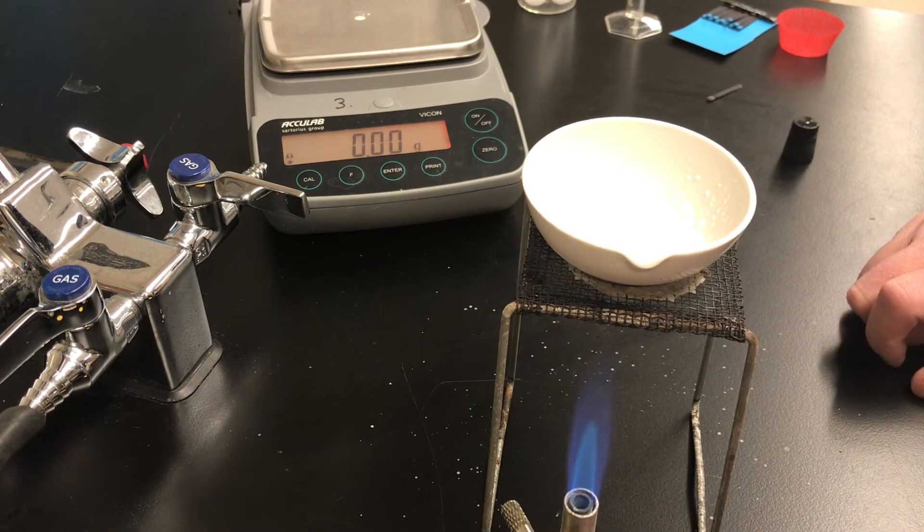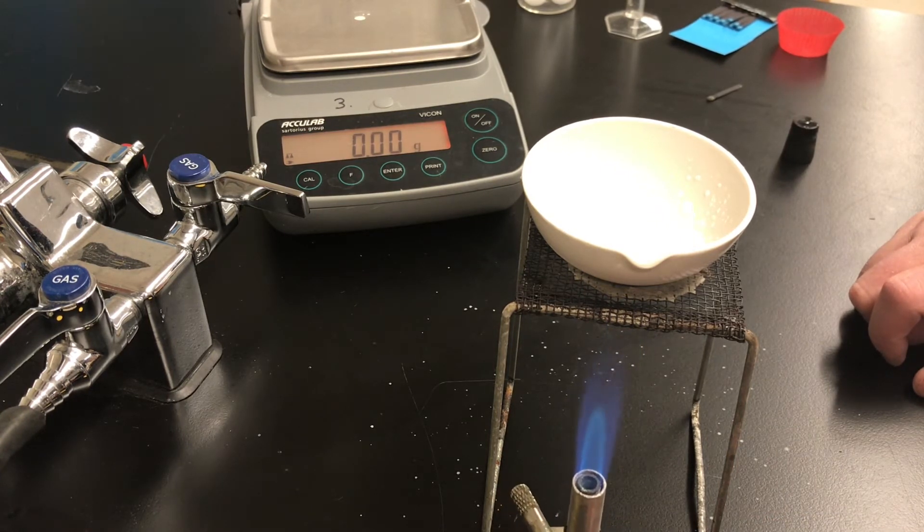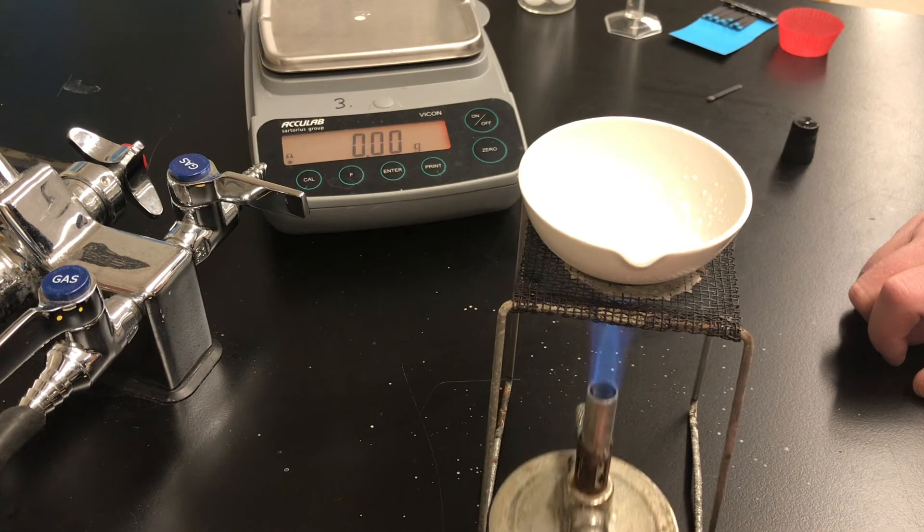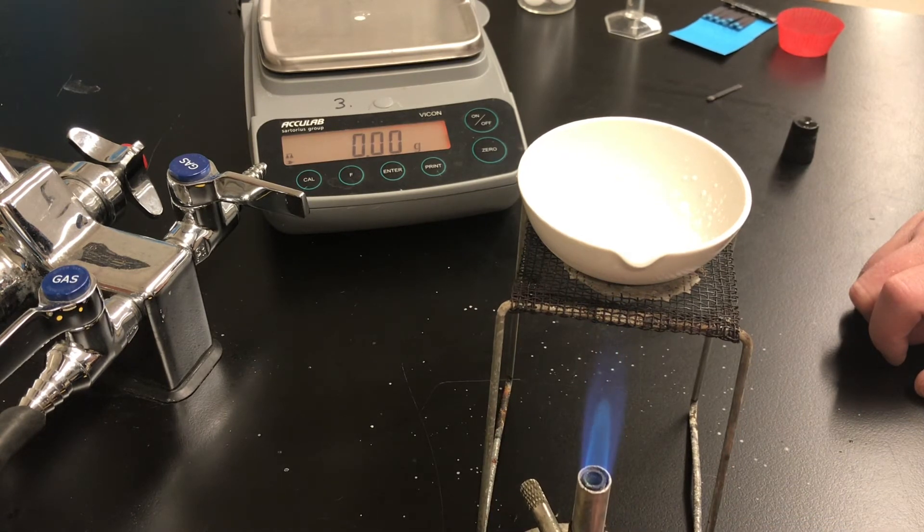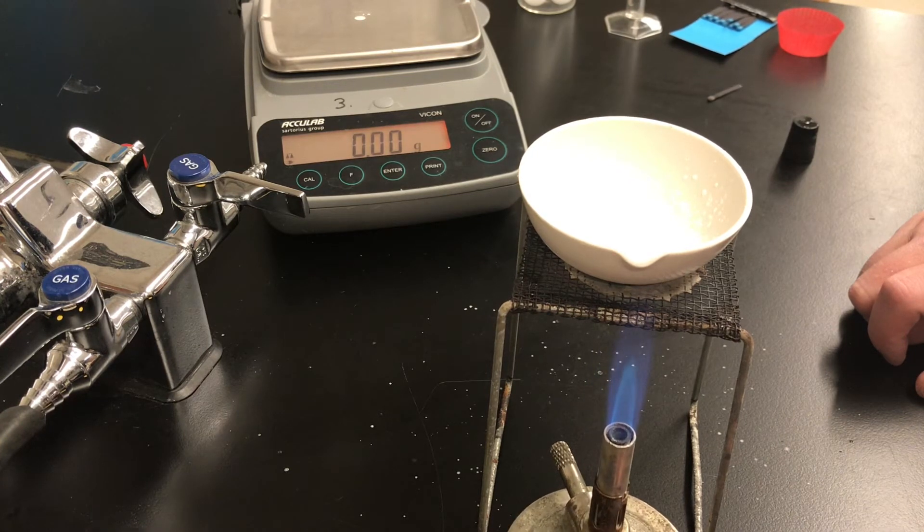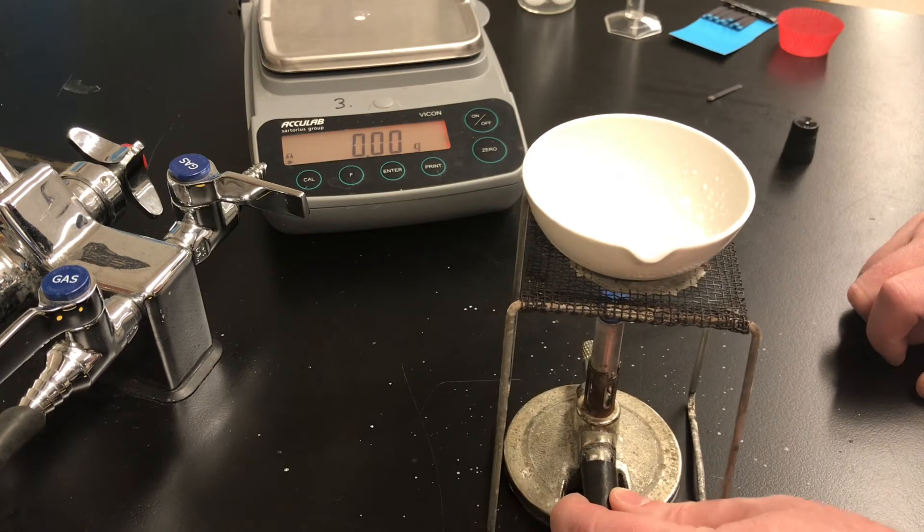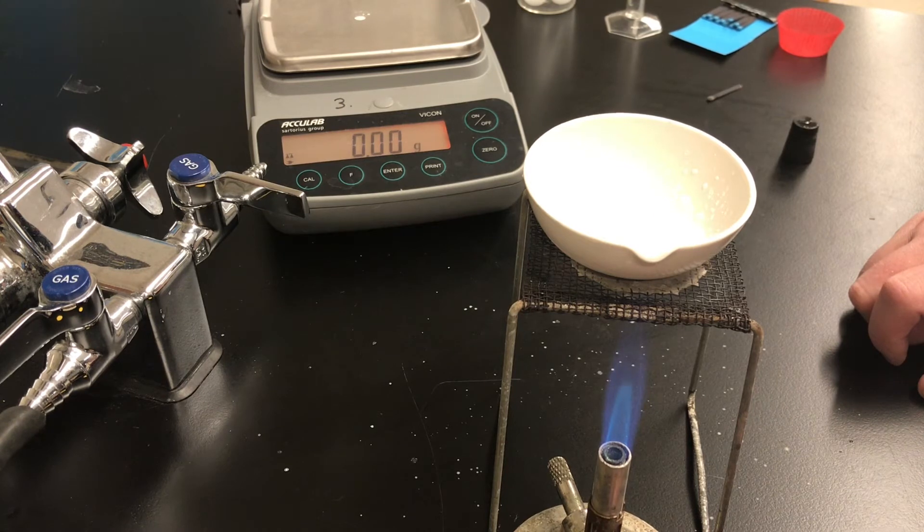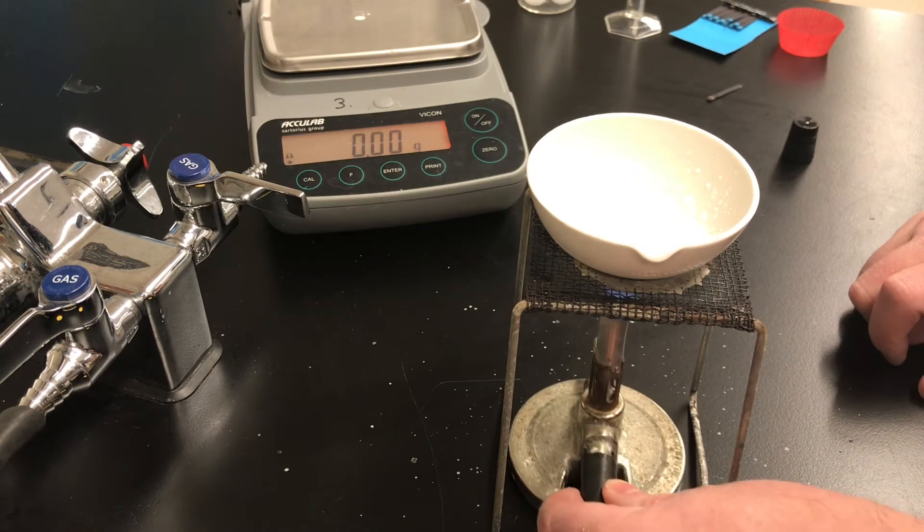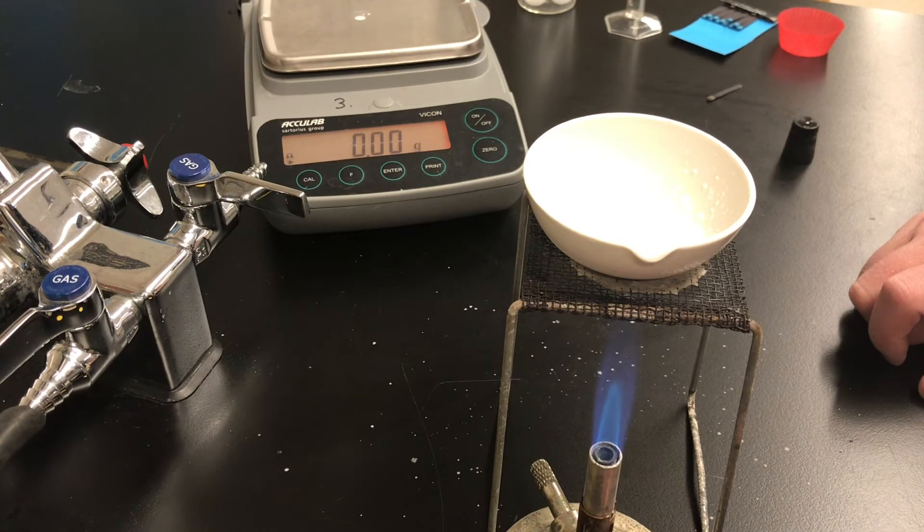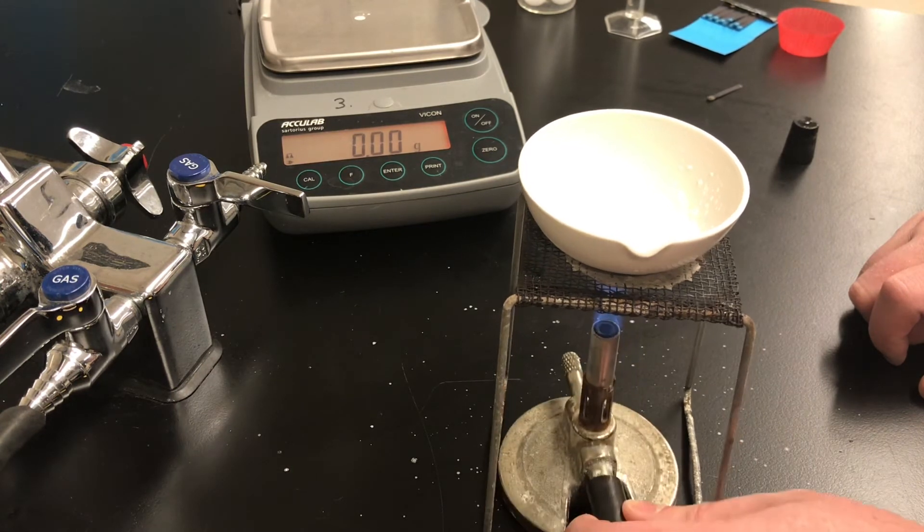We're going to measure in a moment the mass of the dish with the dry salt in it. You'll be able to calculate then how many grams of salt were in that saturated solution. If you look down below in your data table to the results section you can already calculate the first thing you see there. You had measured the mass of the empty dish and the mass of the dish with the saturated solution. You can use those two numbers to calculate the mass of your saturated solution.